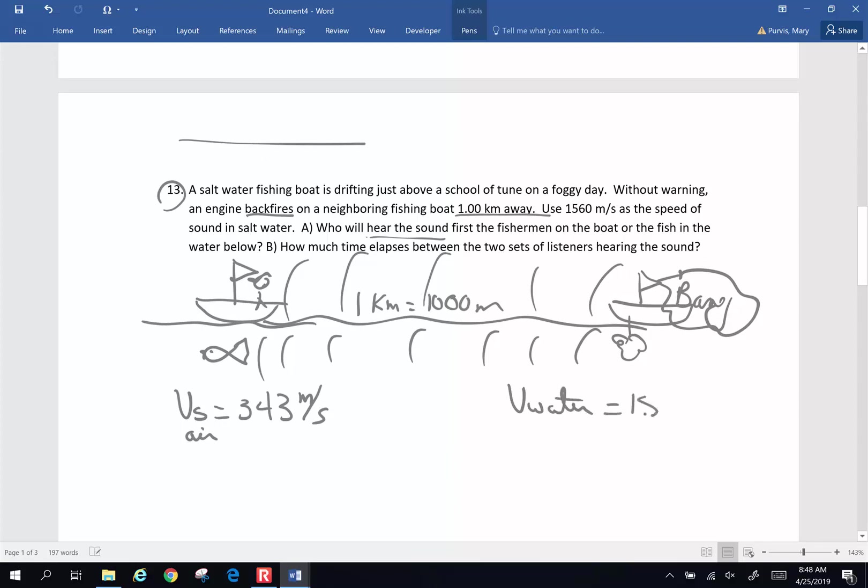That's at 20 Celsius and that's a nice number to use. The velocity of sound in water, we're told, in salt water, is 1560 meters per second. So who's going to hear the boat, the noise first? Well, it's definitely going to be the fish. So for part A, it's definitely going to be the fish.